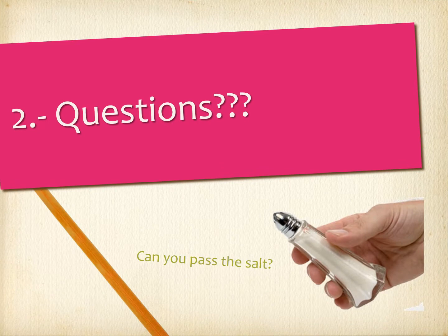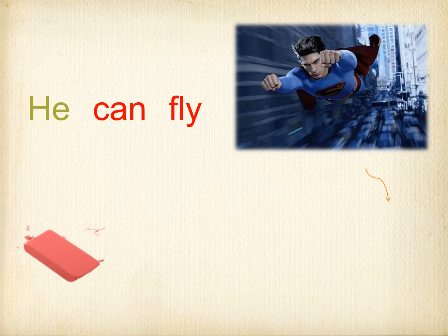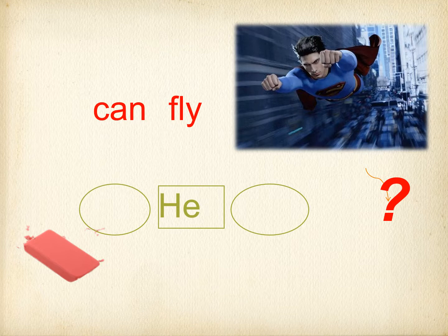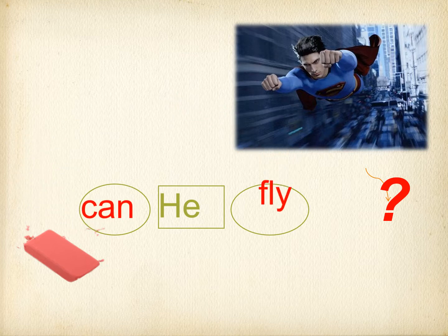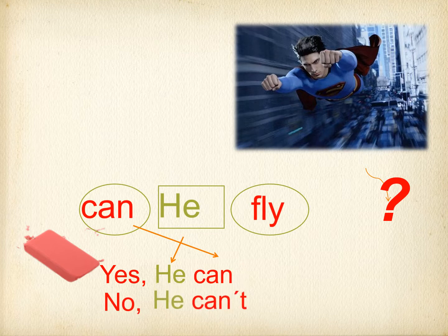Let's see what happens when we have to form the question. Superman can fly! Now, let's see if we can form the question. You know that we form something like a sandwich — in the middle we put the subject: he, she, I, Superman. CAN fly. We have no auxiliaries; the modal verb goes to the position of the auxiliary. So we form: Can he fly? The answer: Yes, he can. Or no, he can't.